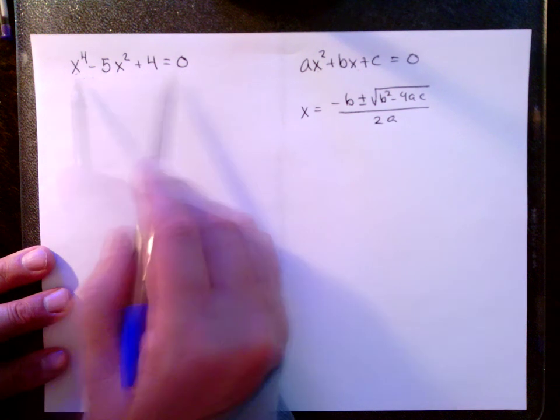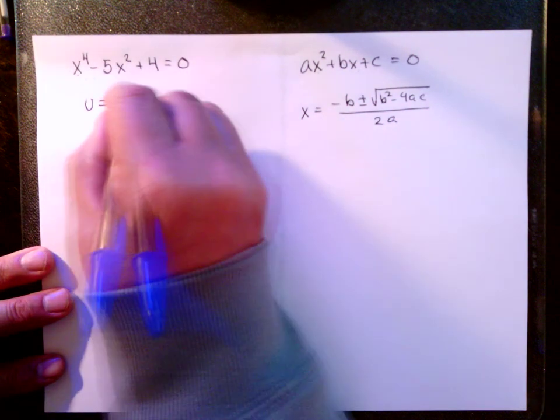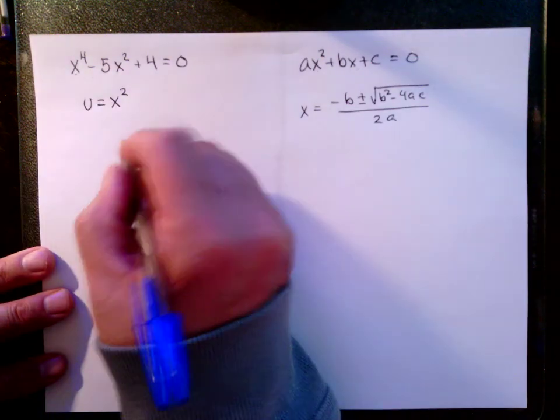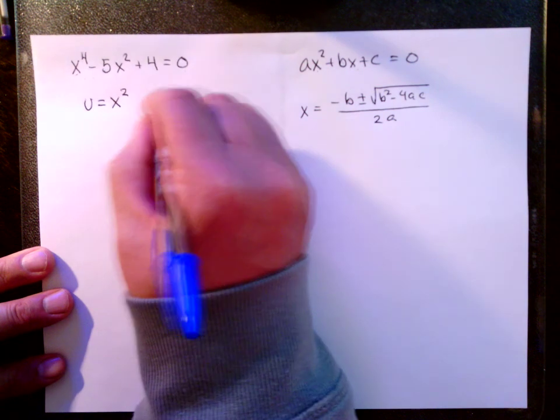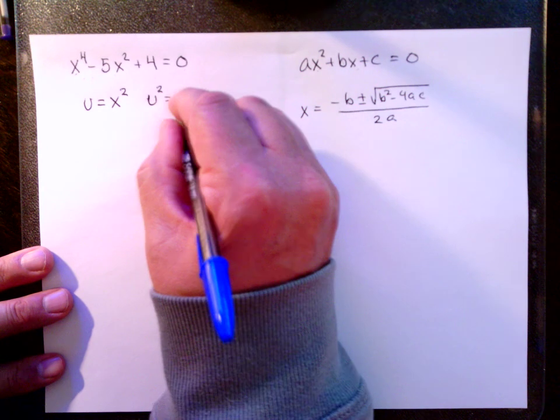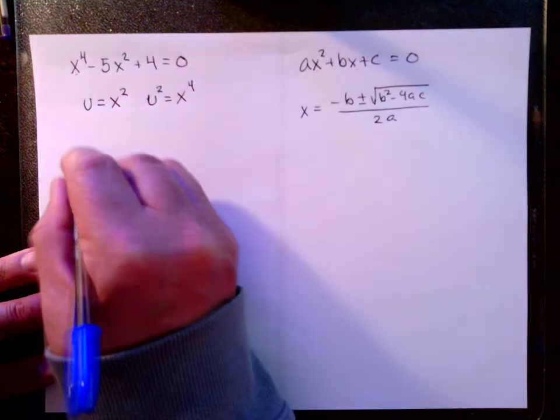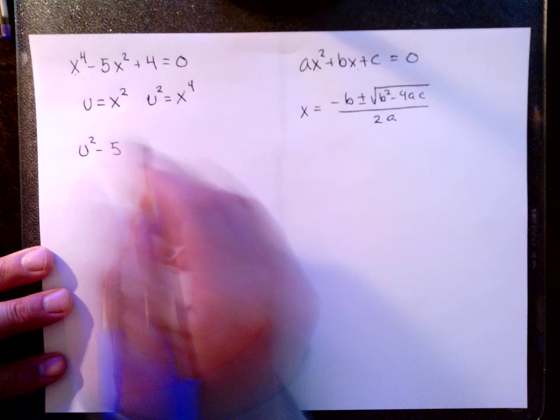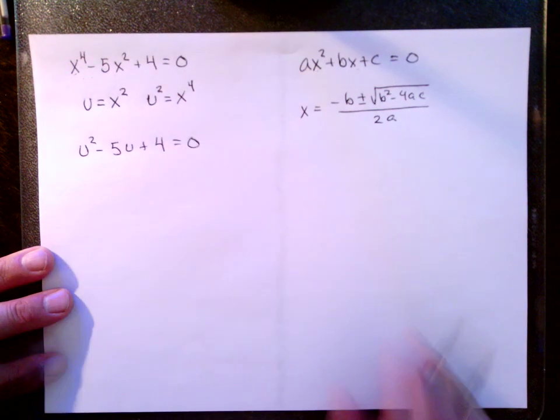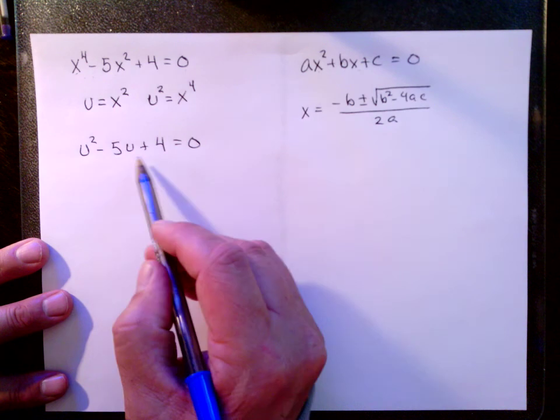What that something is happens to be x squared. So what we'll do is we'll give x squared another name, call it u, and we'll rewrite the equation. Instead of x squared and x to the fourth, we'll use u and u squared, respectively. Now our equation becomes, for x to the fourth, we have u squared, and for x squared we have u. Once we make this substitution, we have a quadratic equation.